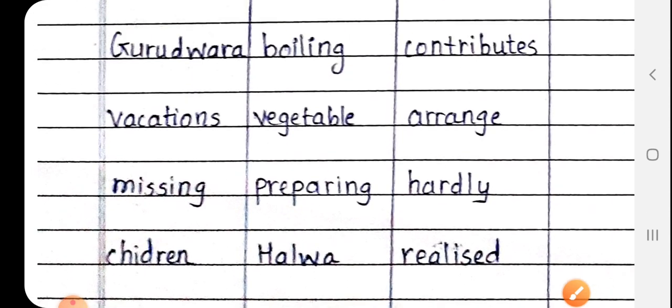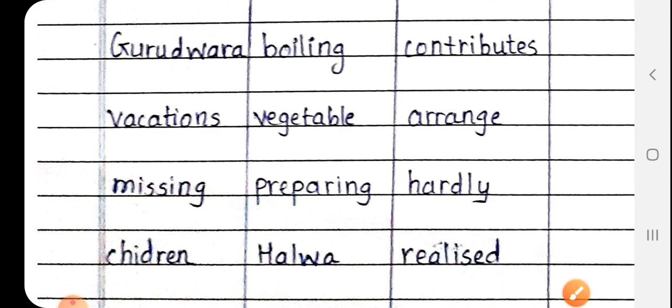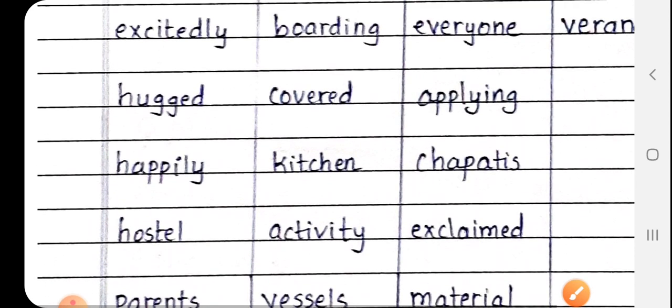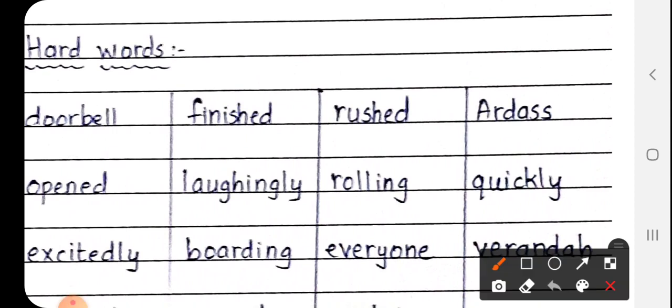Next is preparing, P-R-E-P-A-R-I-N-G. Preparing means taiyari. Next Halwa, H-A-L-W-A. Halwa is a sweet dish. You all must have eaten halwa, right students? Next rushed, R-U-S-H-E-D. Rushed means jaldi se pahunchna, hurried.